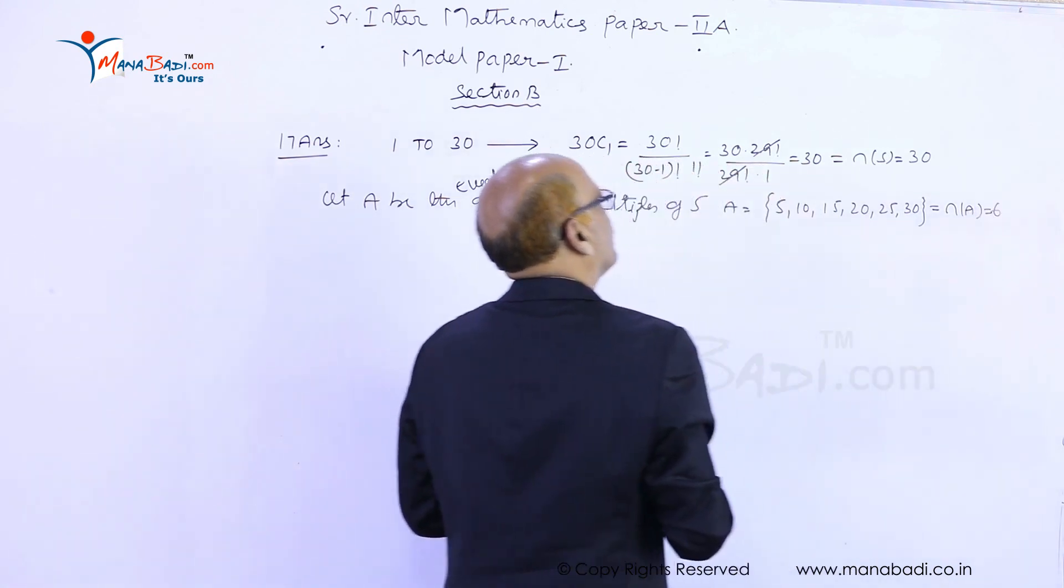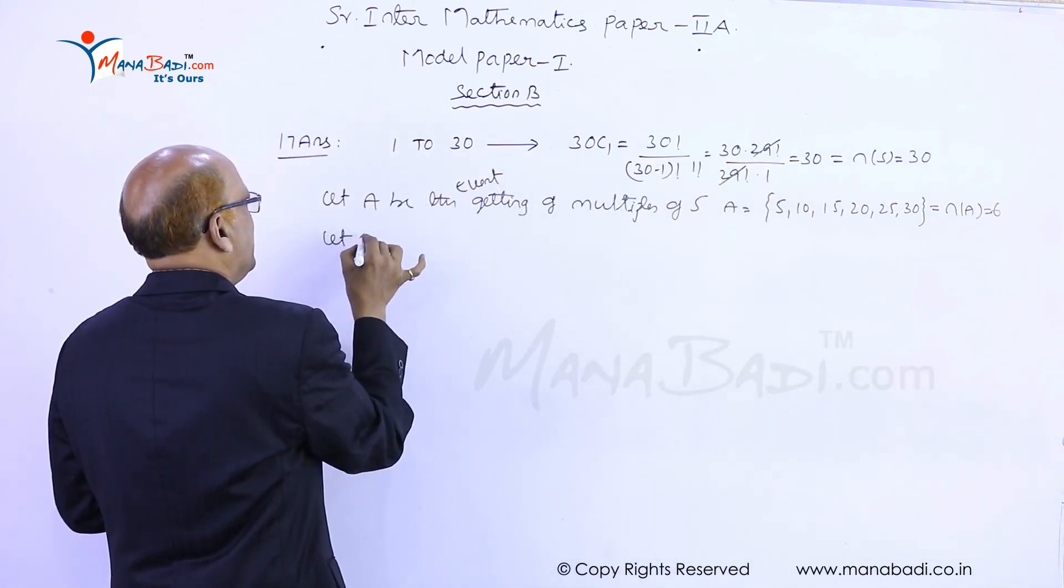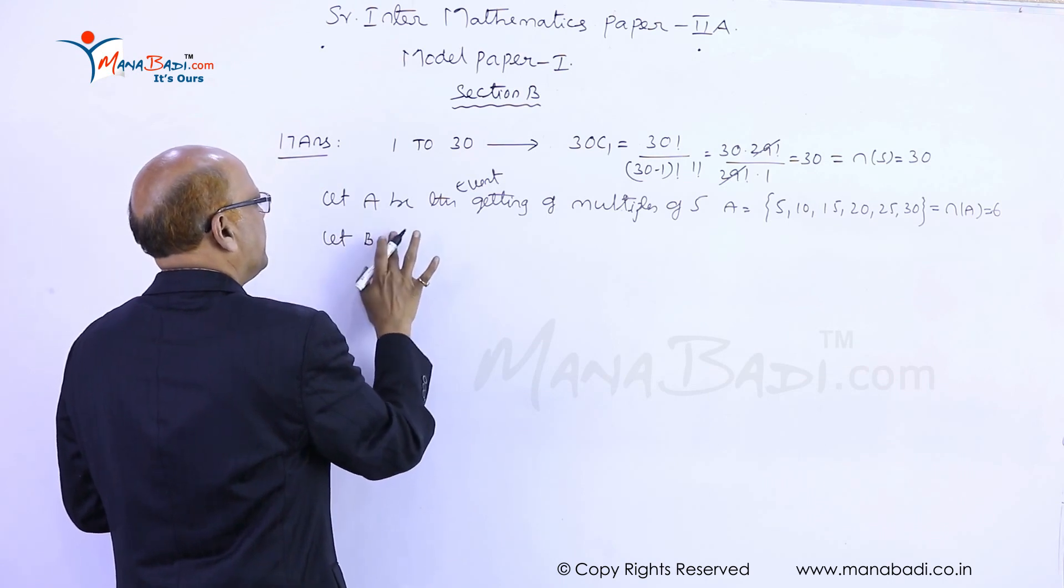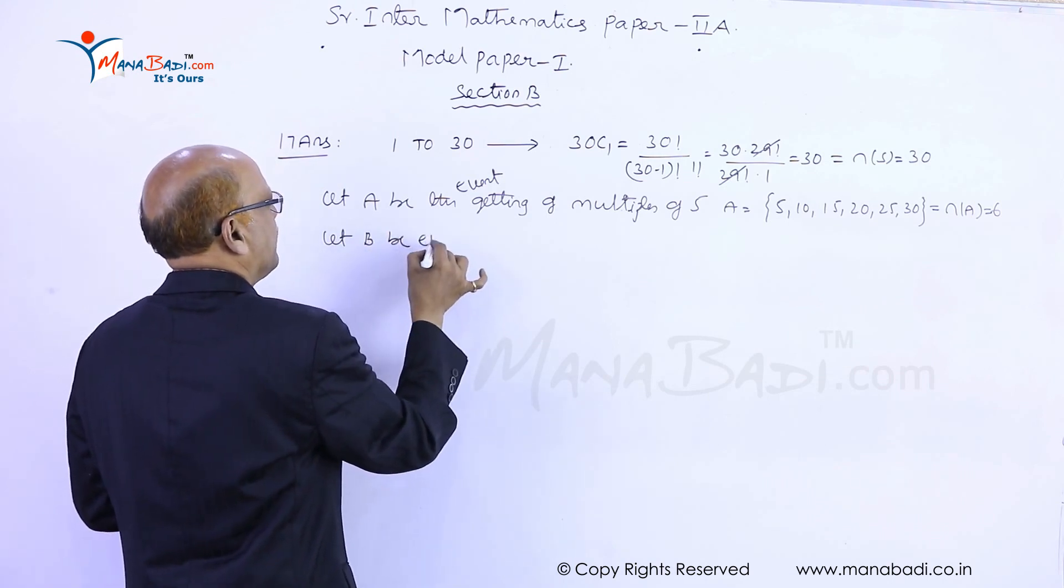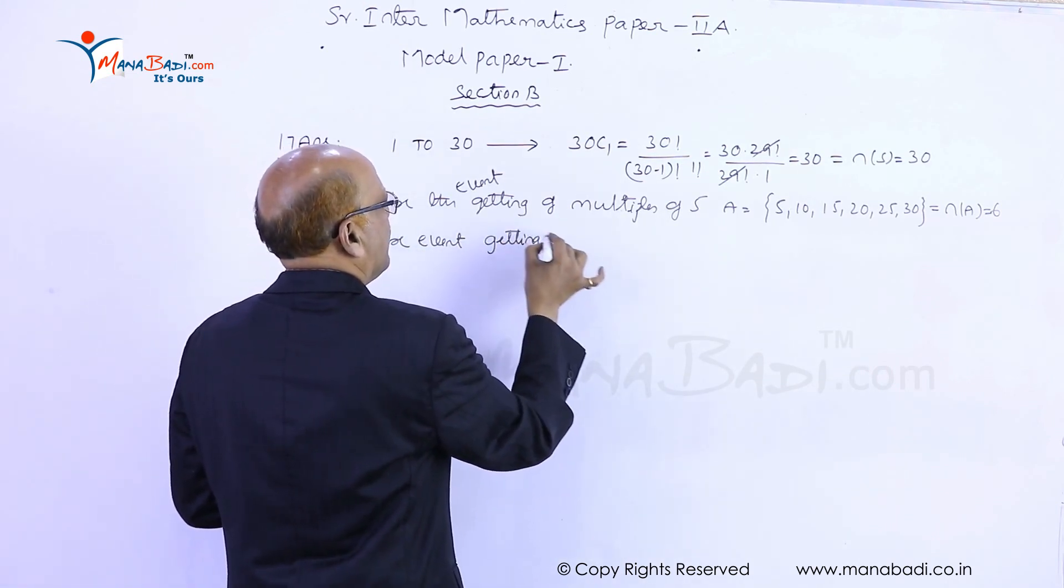Let B be the event, B be the event getting multiples of 7.